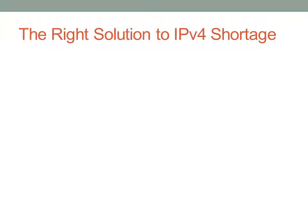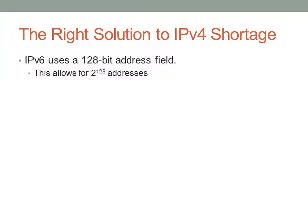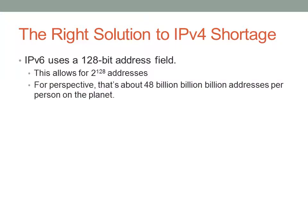Here's the idea behind the IPv4 shortages that we've talked about so far. You can use translation, but that's kind of a workaround. The idea here is that we need a new addressing space. IPv6 uses a 128-bit address field — that is huge. It allows for 2 to the 128th addresses, that's 48 billion billion billion addresses.